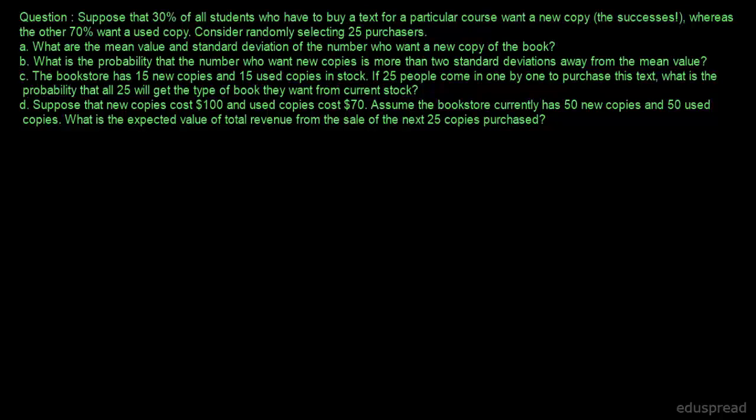In this lecture, I am going to solve this question. Suppose that 30% of all students who have to buy a text for a particular course want a new copy, whereas the other 70% want a used copy. Consider randomly selecting 25 purchasers. In part A, we have to find the mean value and standard deviation of the number who want a new copy of the book.